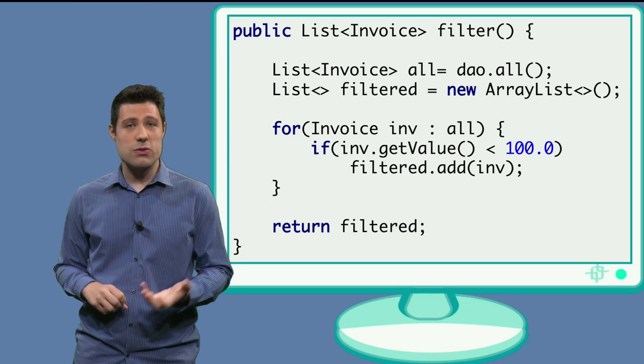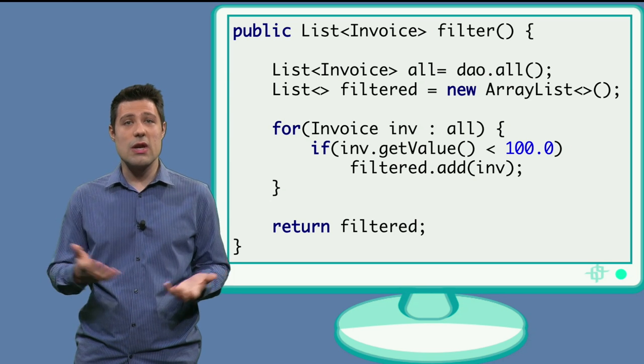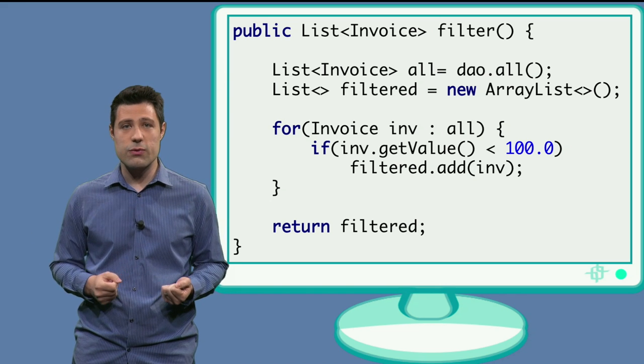We want our code to use the mocks when the program is being tested. And we want the program to use the real class, the real data access object, when the program executes for real.